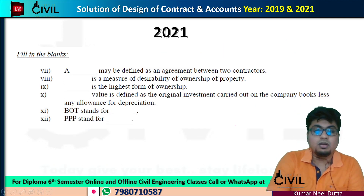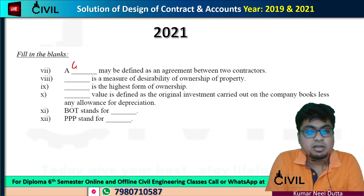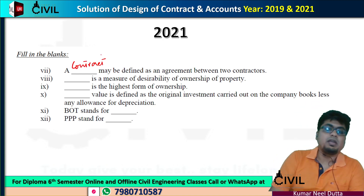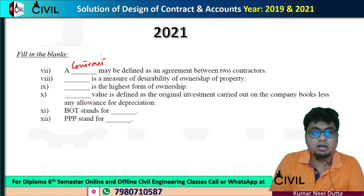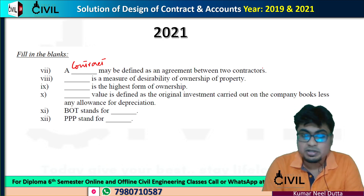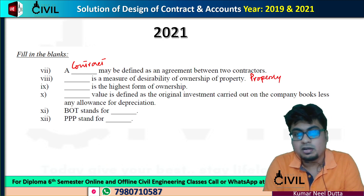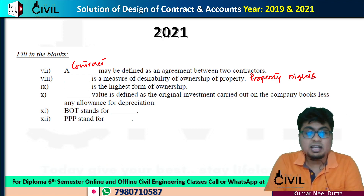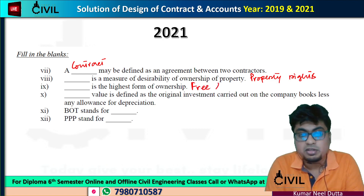Next, we are going to fill in the blanks. A dash may be defined as an agreement between two contractors — so a contract may be defined as an agreement between two contractors. Dash is a measure of higher desirability of ownership of properties — so property rights. Next, dash is the highest form of ownership — which is freehold property, meaning that you can freely hold this property.